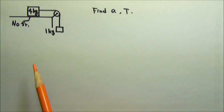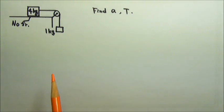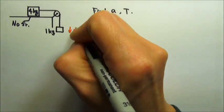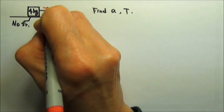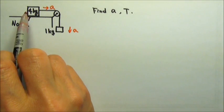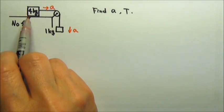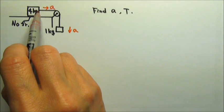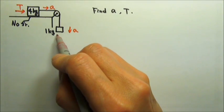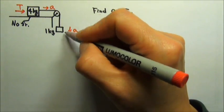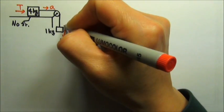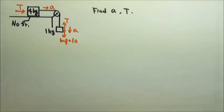One way to solve this problem is to draw a force diagram and write a force equation for each box. There is no friction, so the 1 kg box is going to accelerate downward and the 4 kg box is going to accelerate to the right. For the 4 kg box, we just worry about horizontal forces — the only horizontal force is the tension in the string. For the 1 kg box, the acceleration is vertical, so we draw the vertical forces: mg, which is 10 newtons, and the tension pulling upward.